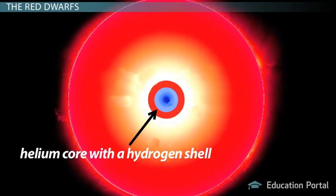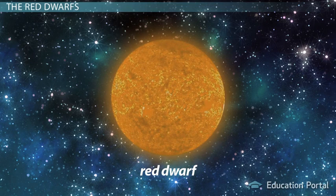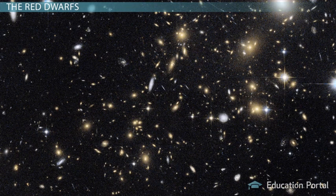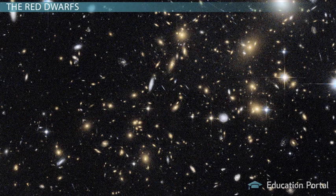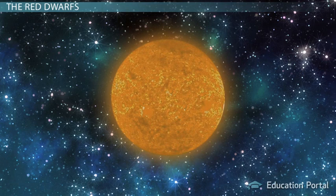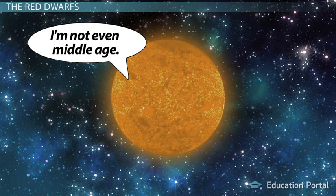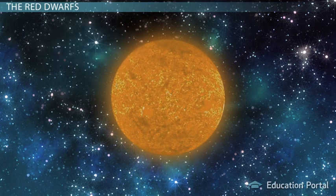In the end, no red dwarf has actually met its end. Our universe is only about 13.7 billion years old, but due to everything you've just learned, a red dwarf can live for over 100 billion years. By extension, this means that no red dwarf ever born has ever died of old age yet. Talk about good genes.